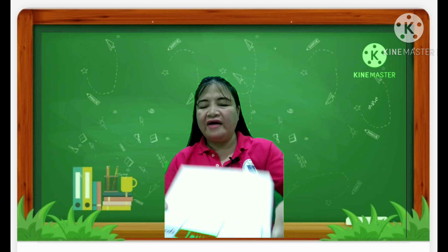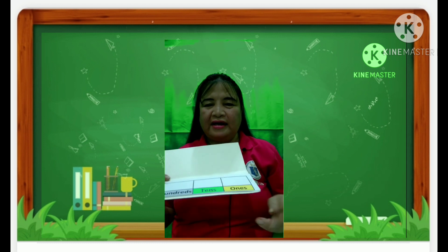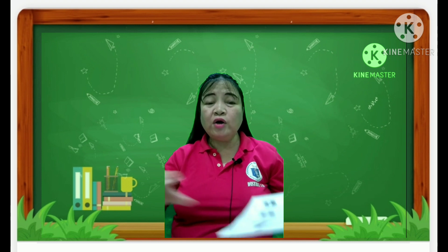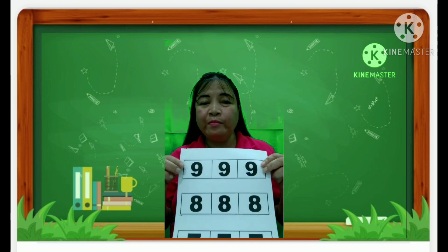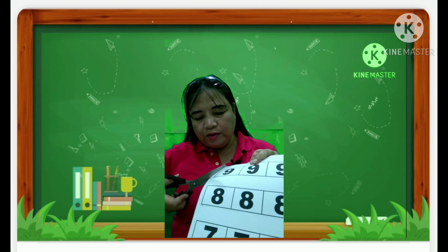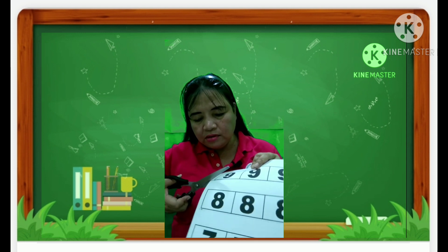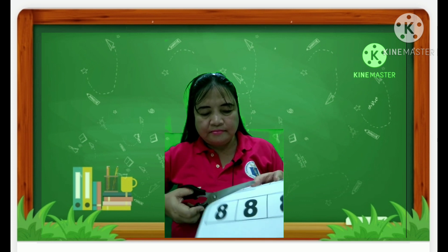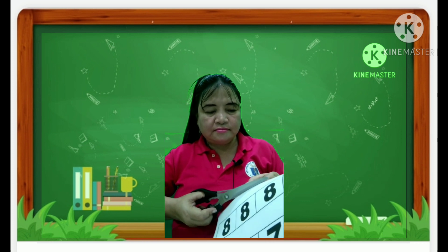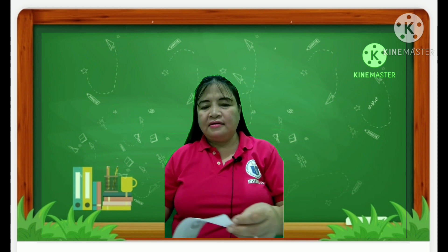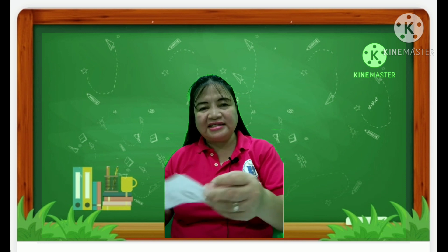There you have it. Next, we are going to cut number 9. We have the arrow there — cut it straight. Then 8.